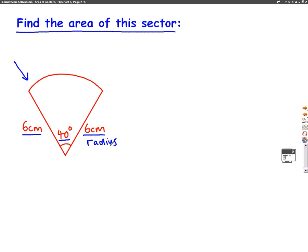Right, so if you think about a sector as a fraction of a circle, we can start by calculating what fraction we actually have. Well, we have 40 degrees of a circle, and a whole circle is 360 degrees. So we have 40 out of 360 of a circle. That's our fraction.